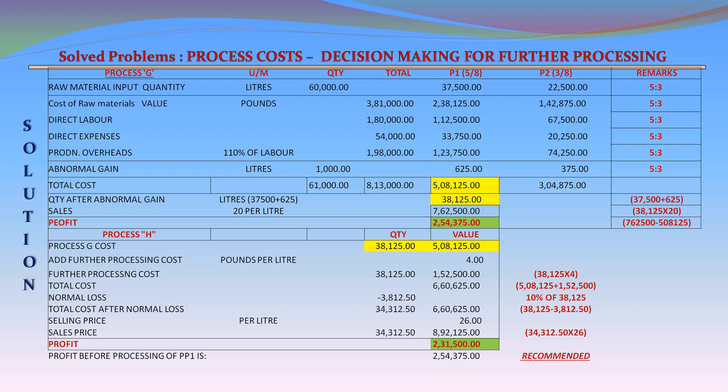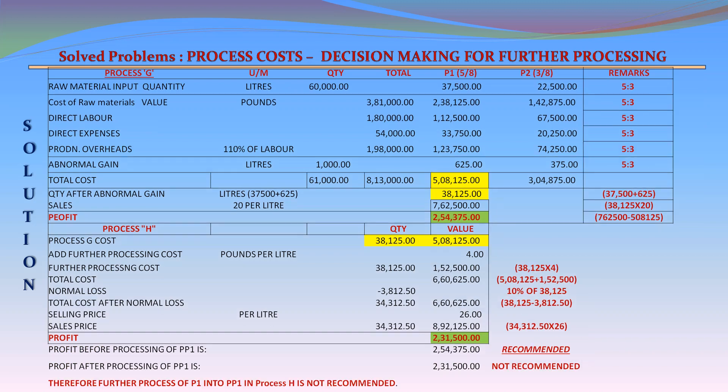Profit before further processing P1 into PP1: £254,375. Profit after further processing P1 into PP1: £231,500. Therefore, further processing of P1 into PP1 in Process H is not recommended.